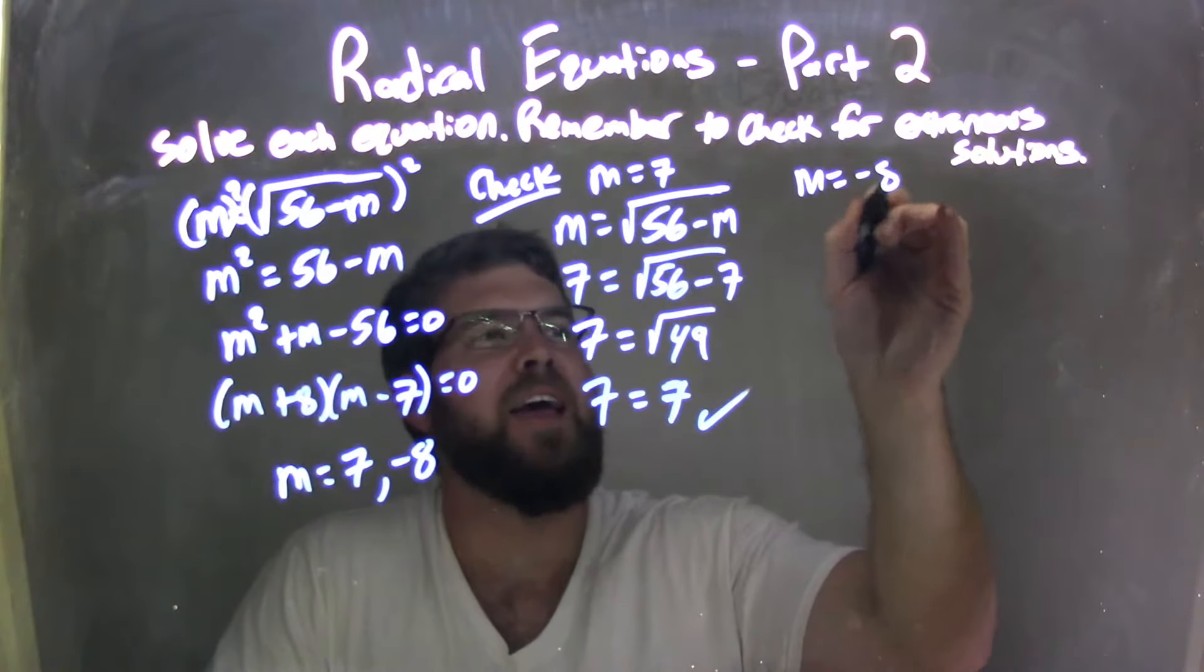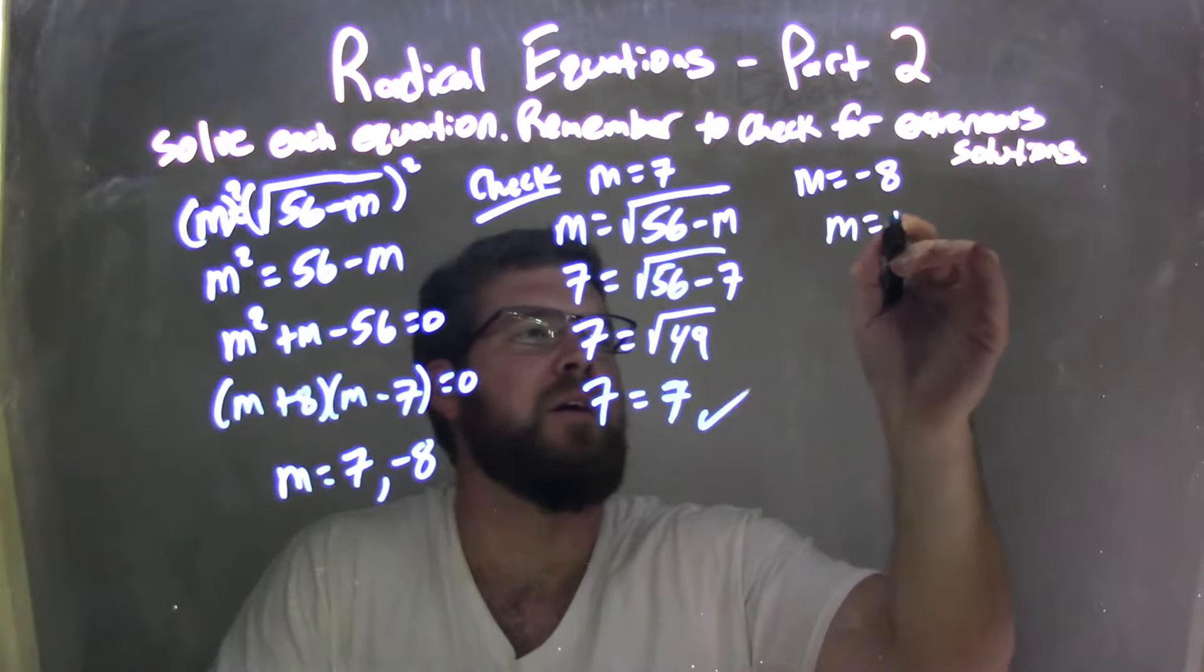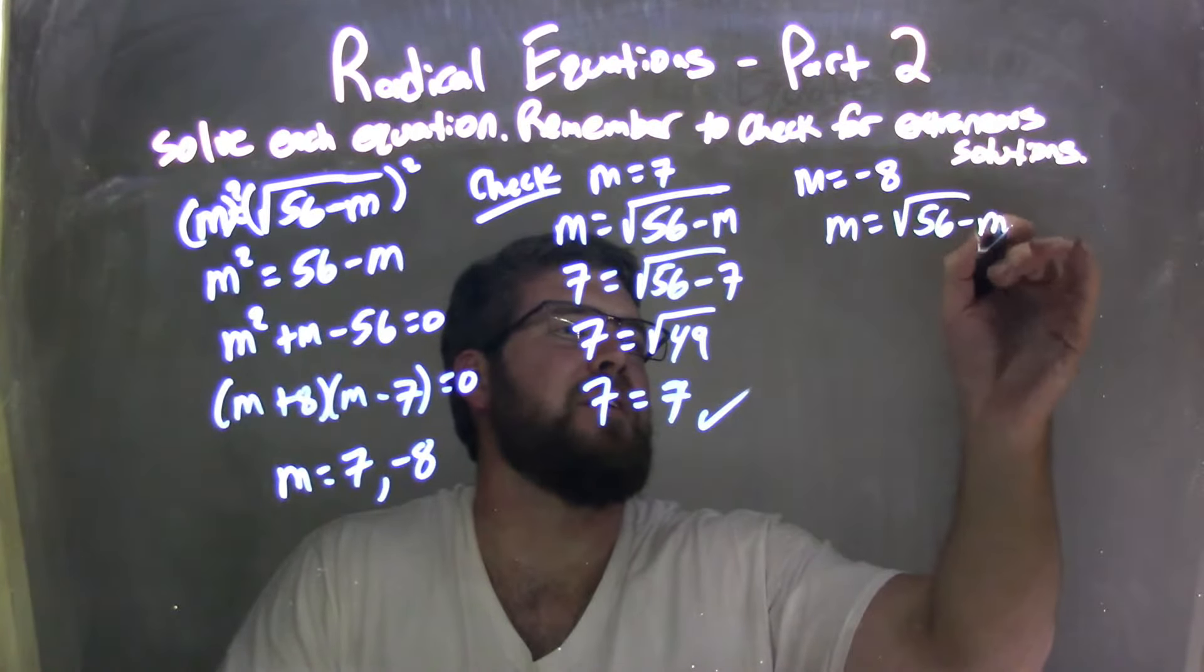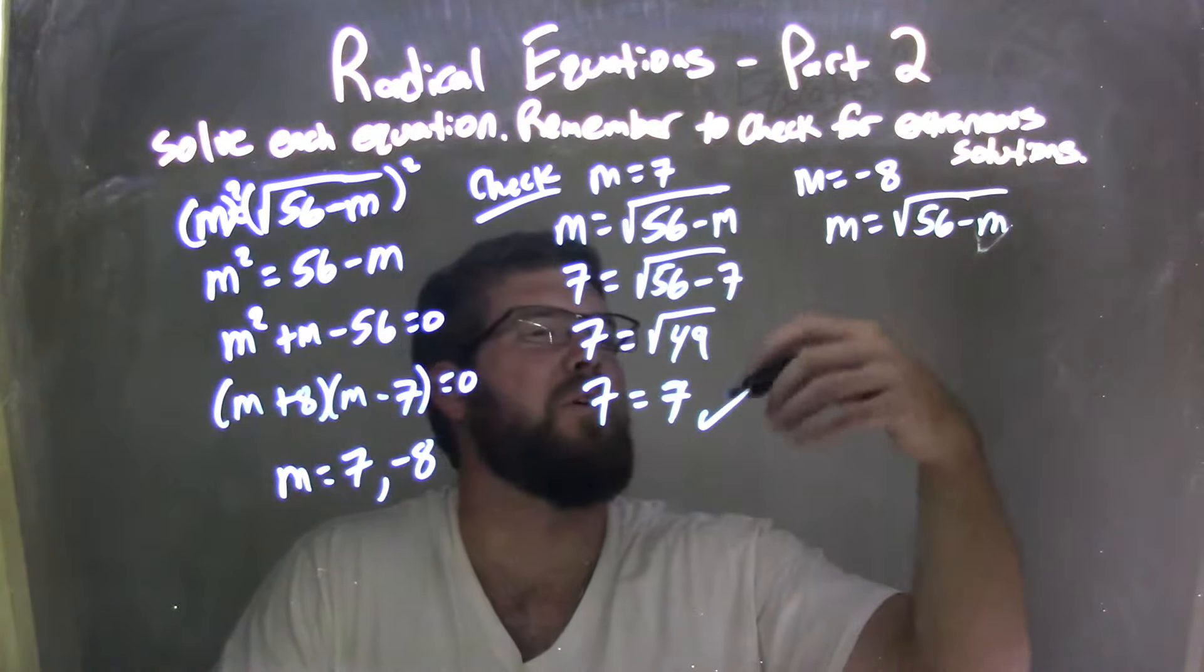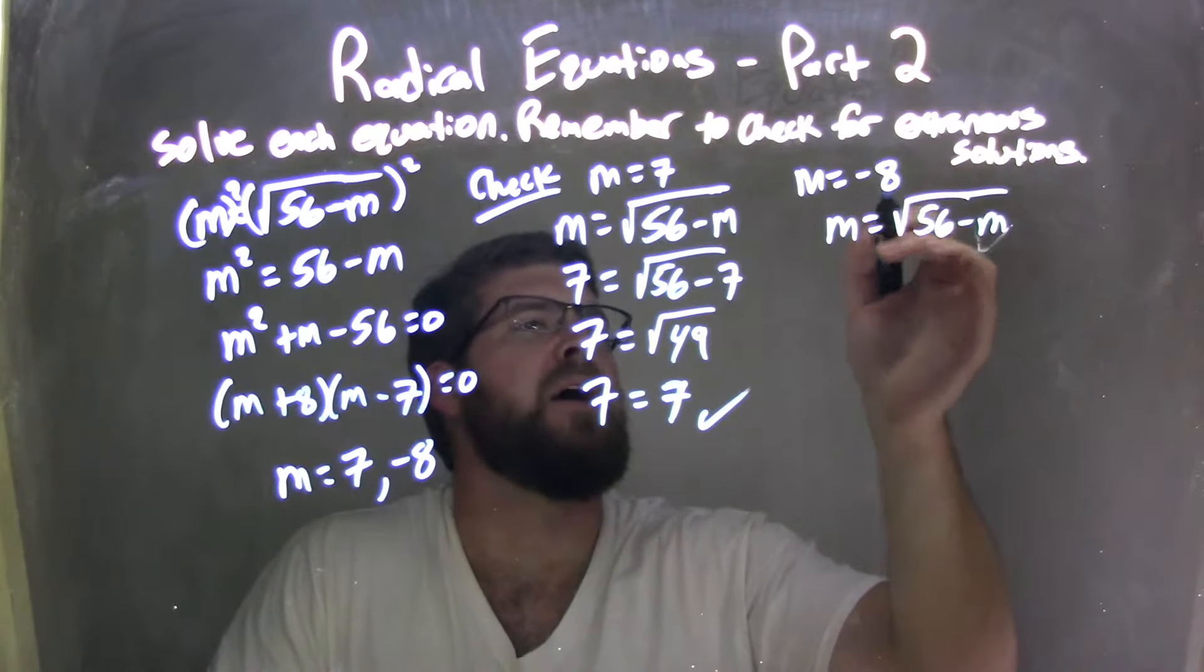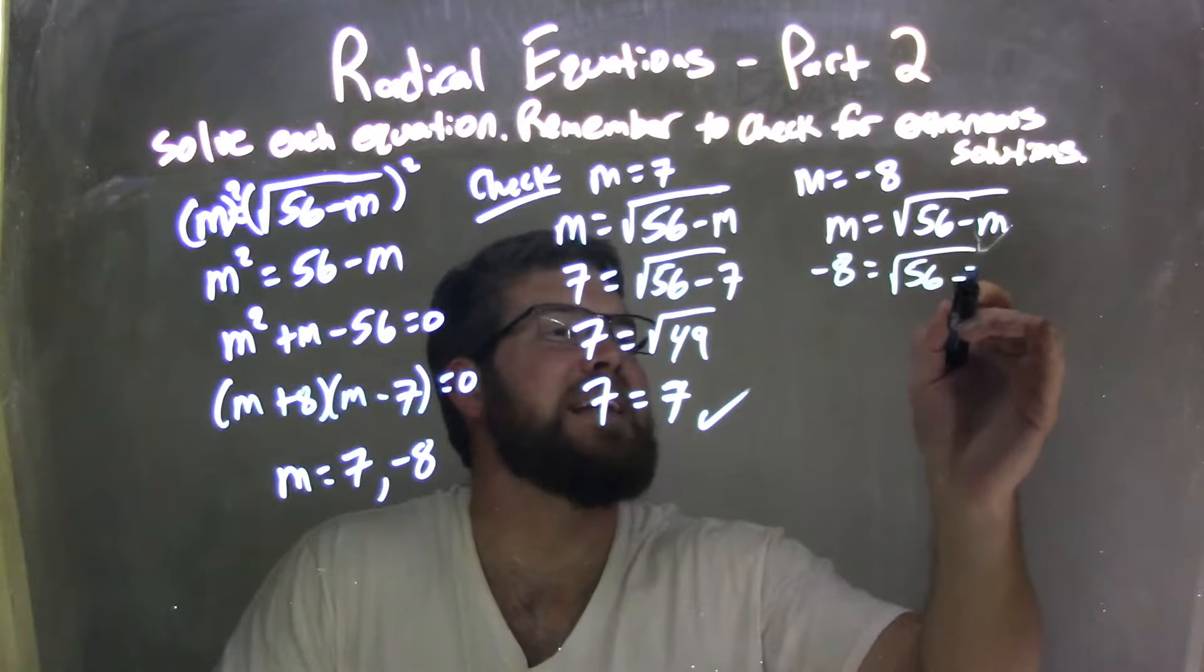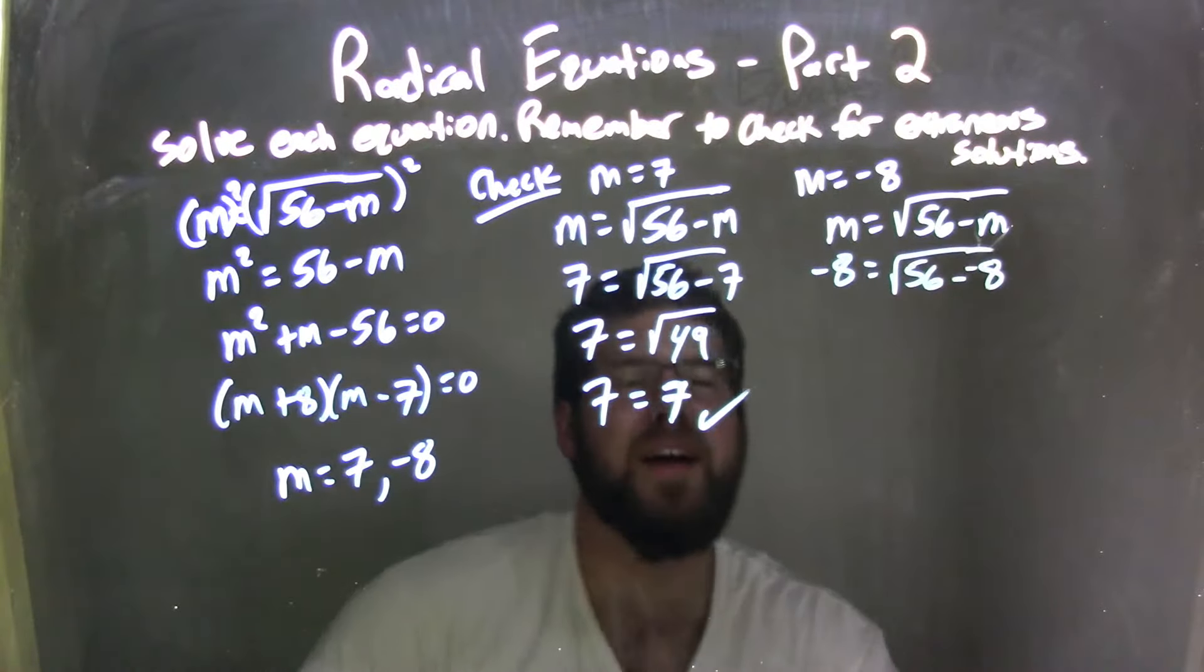m equals negative 8. Let's rewrite our equation: m equals square root of 56 minus m. If I can rewrite the equation, you can too on your homework or whatever you're doing here. Negative 8, let's plug it in. Negative 8 equals square root of 56 minus a negative 8.